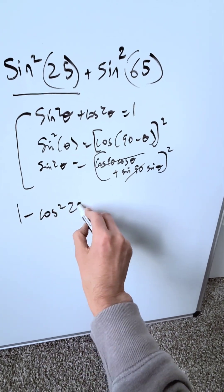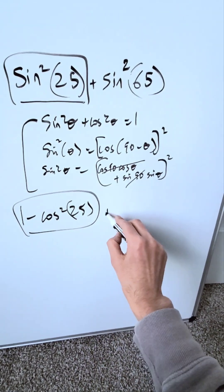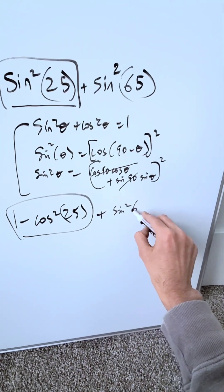I'll have that 1 minus cosine squared of 25 substitutes for this item right over here. Then I have a plus sine squared 65.